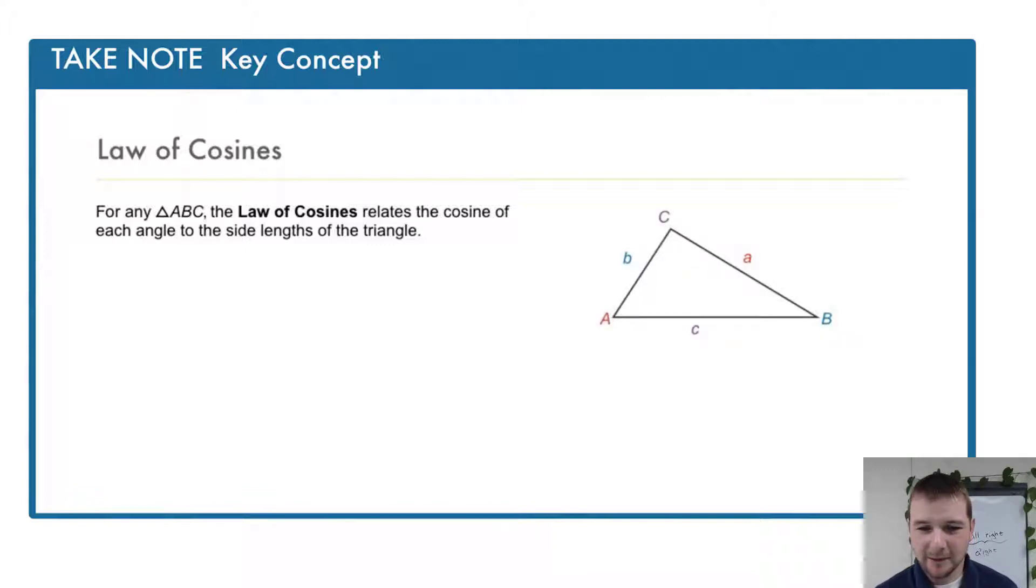For example, in this triangle, note side C is opposite from angle C, side A is opposite from angle A, and side B is opposite from angle B.